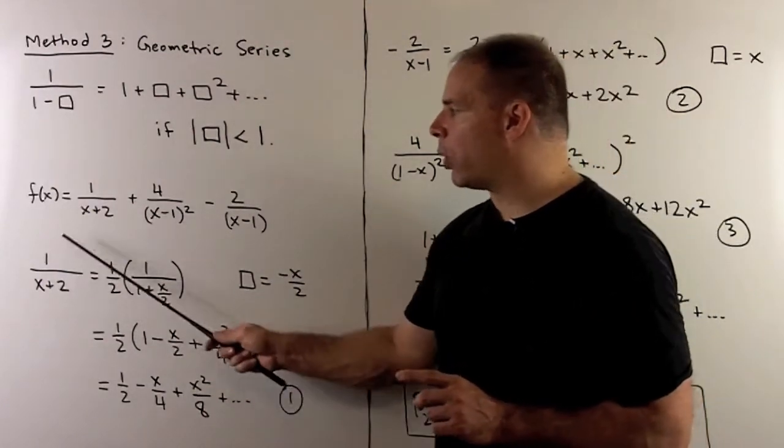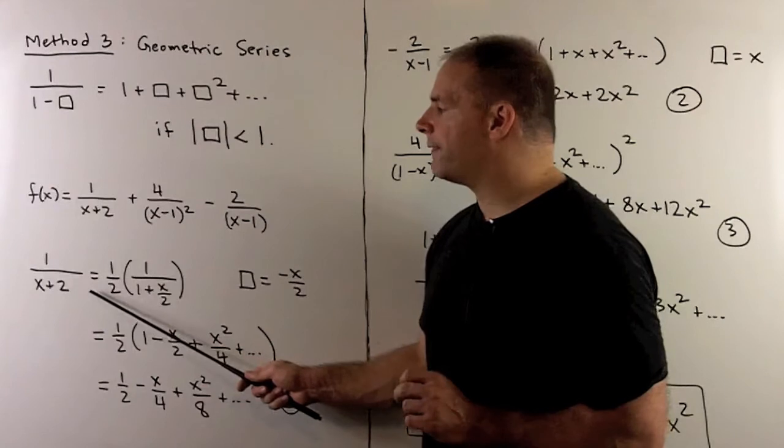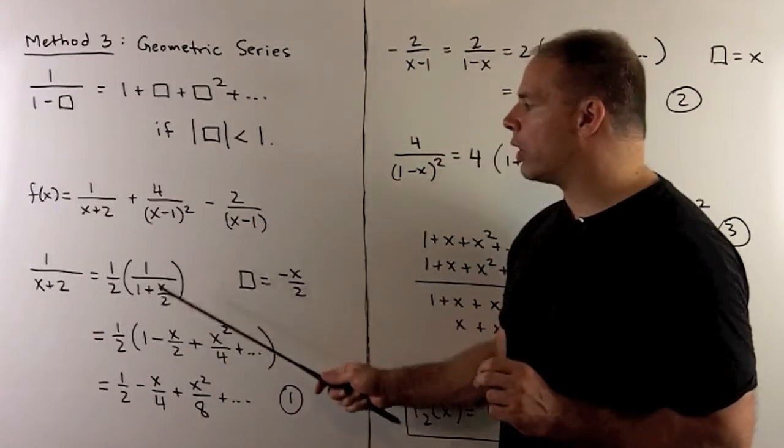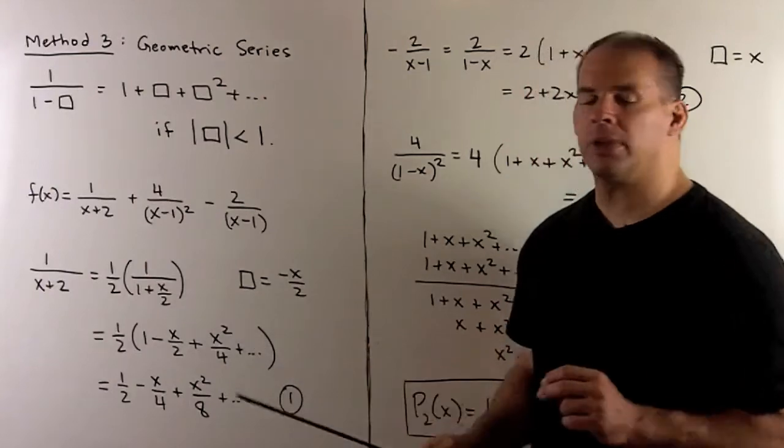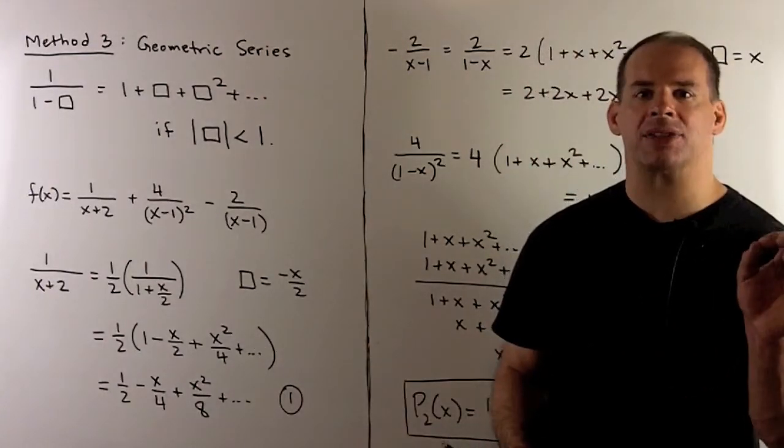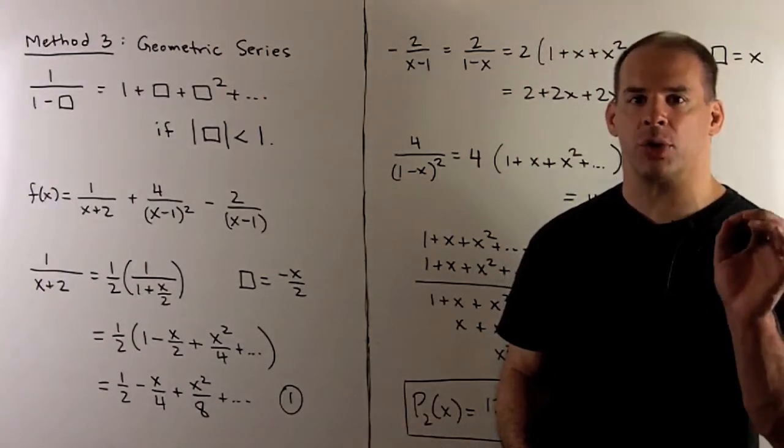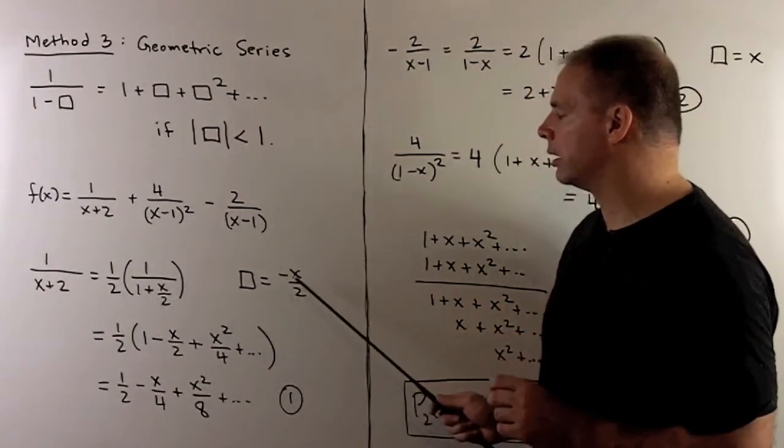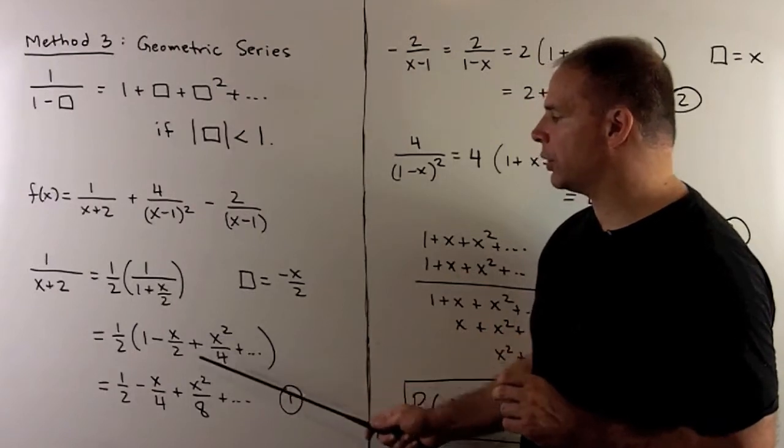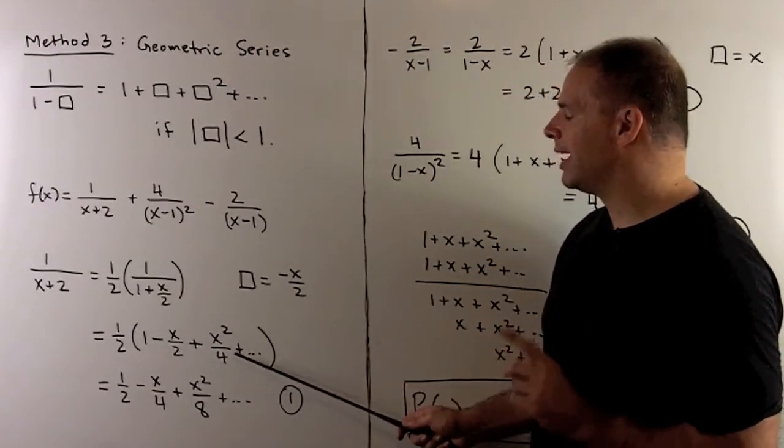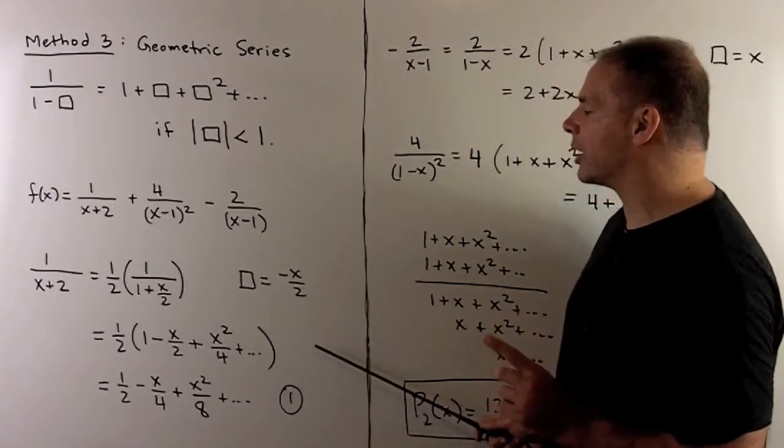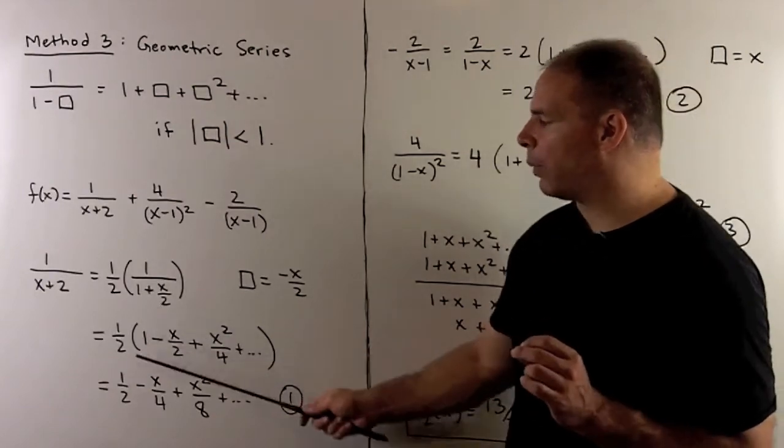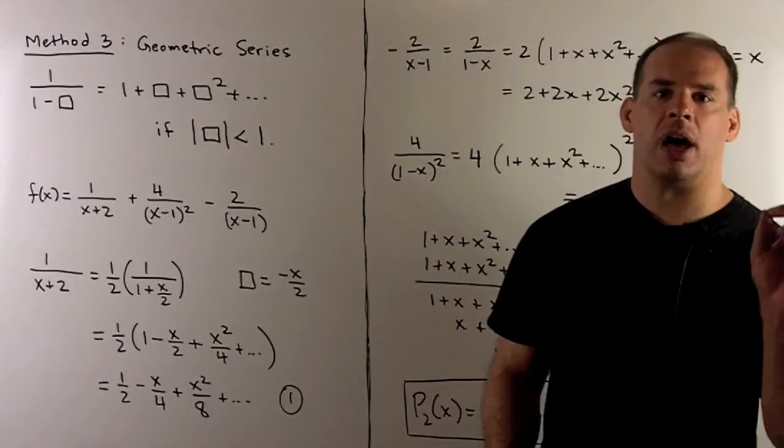For our first term, we have 1/(x+2). I'm going to factor a 2 out of the denominator, which will give me 1 over 1 + x/2. So in this case our box is going to be equal to -x/2. We want a minus sign after this 1. So we'll have 1 - x/2 + x²/4. I'm not interested in cubic or higher terms, so we can just stop there. Multiply through by 1/2. We'll call this item 1.